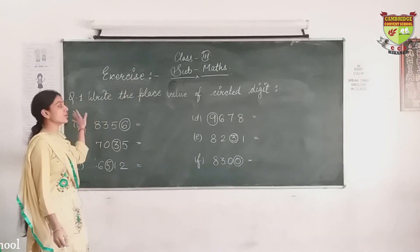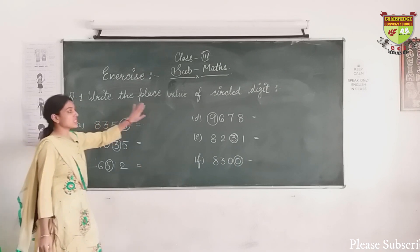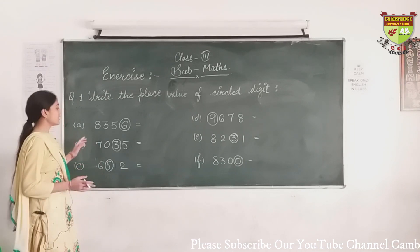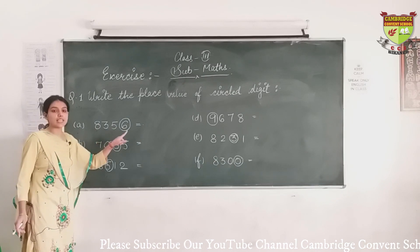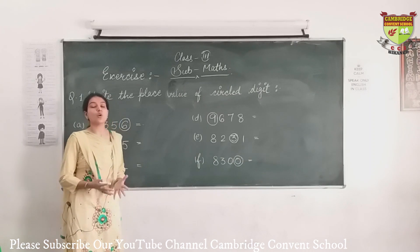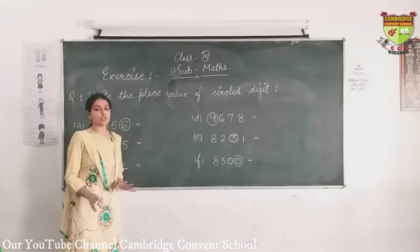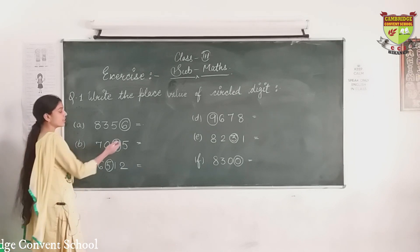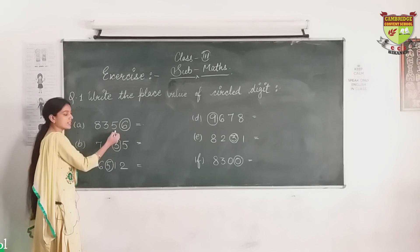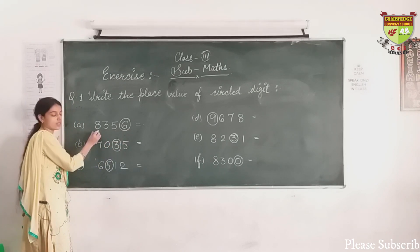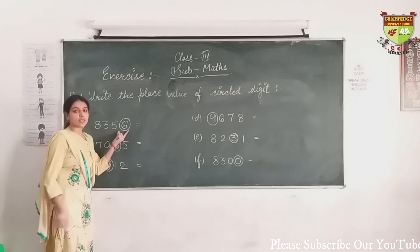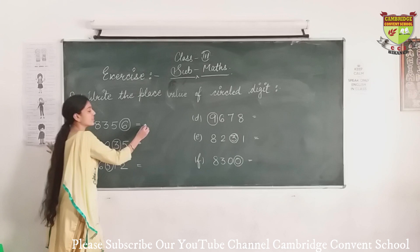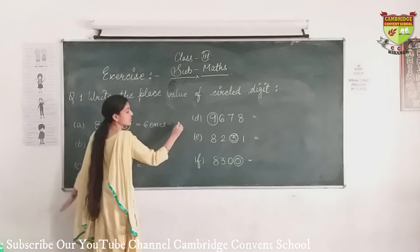Now exercise — we are doing some questions on place value. Question 1: write the place value of the circled digit. For the circled digits, you have to find their place value. The first number is 8,356. Place value is the value of a digit according to its place or position. We read the number starting from the extreme right side: this place is 1's, 10's, 100's, and 1000's. So 6 is in the 1's place, which means the place value of 6 is 6.